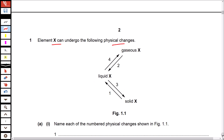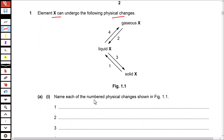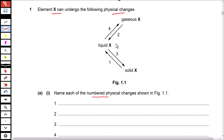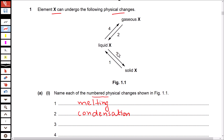Name each of the numbered physical changes shown in the figure. Number one is converting solid to liquid — that is melting. Two is conversion of gas to liquid — that is condensation. Three is liquid to solid — that is freezing. And four is liquid to gas — that is boiling.